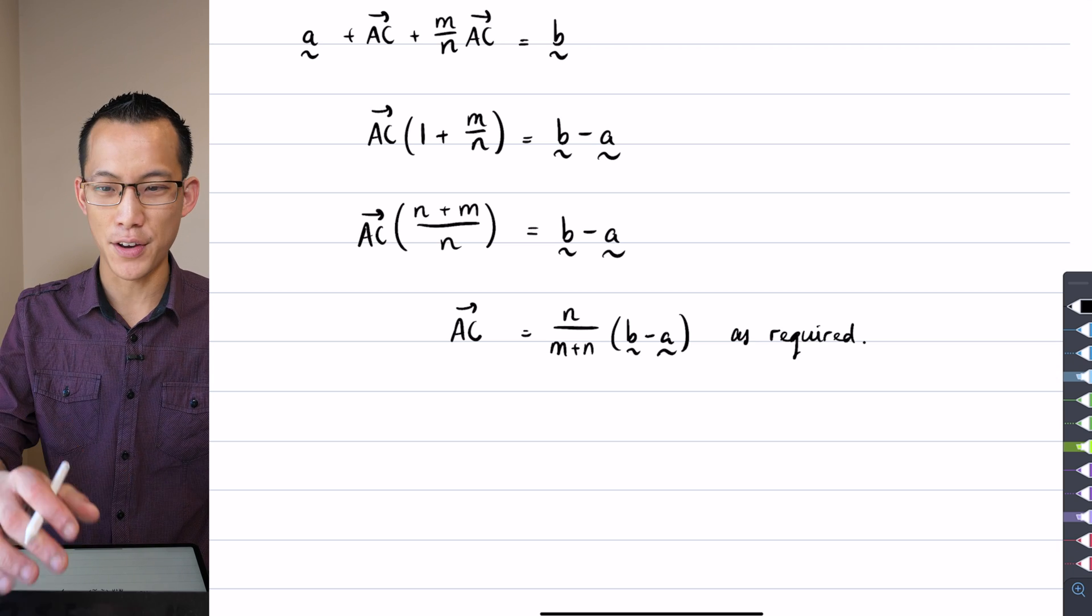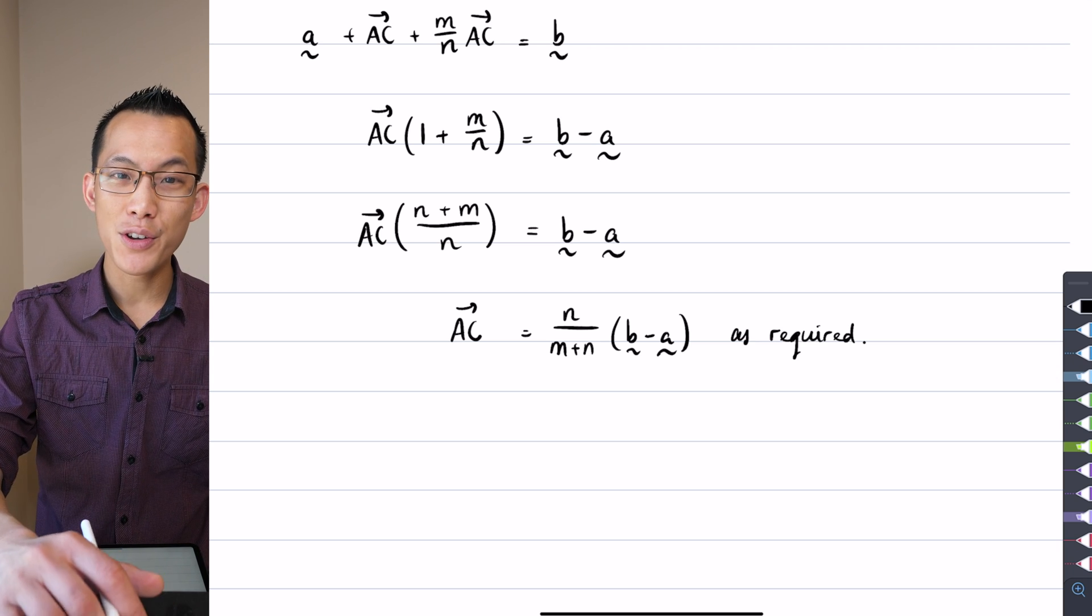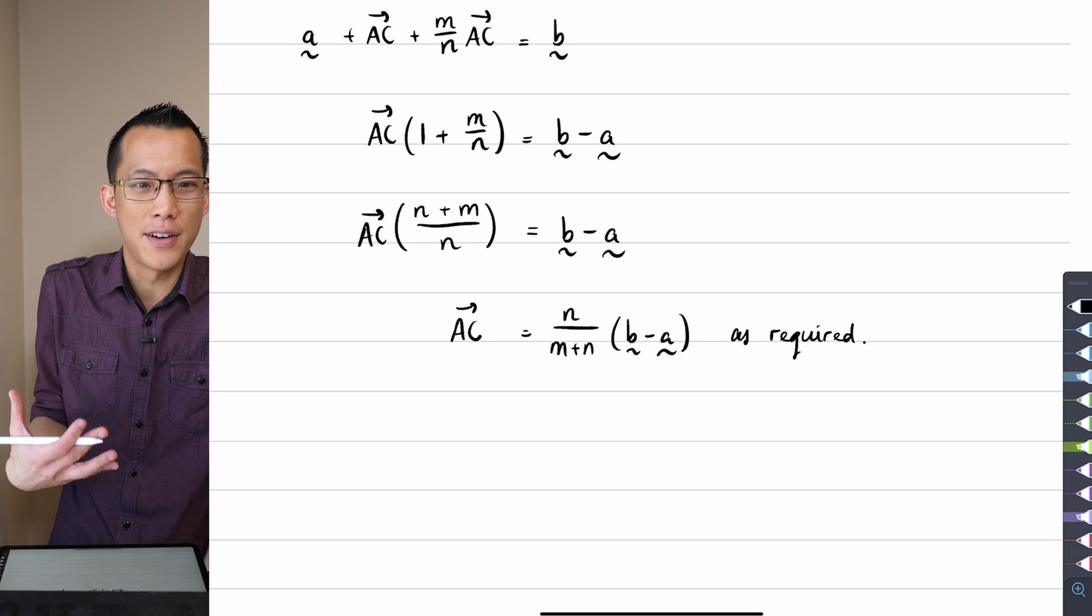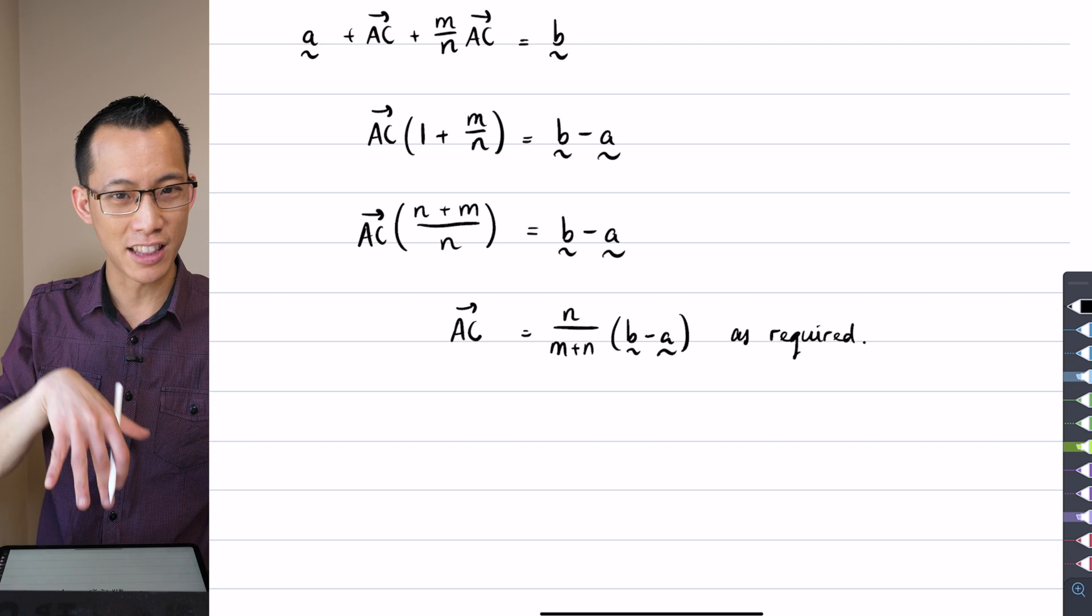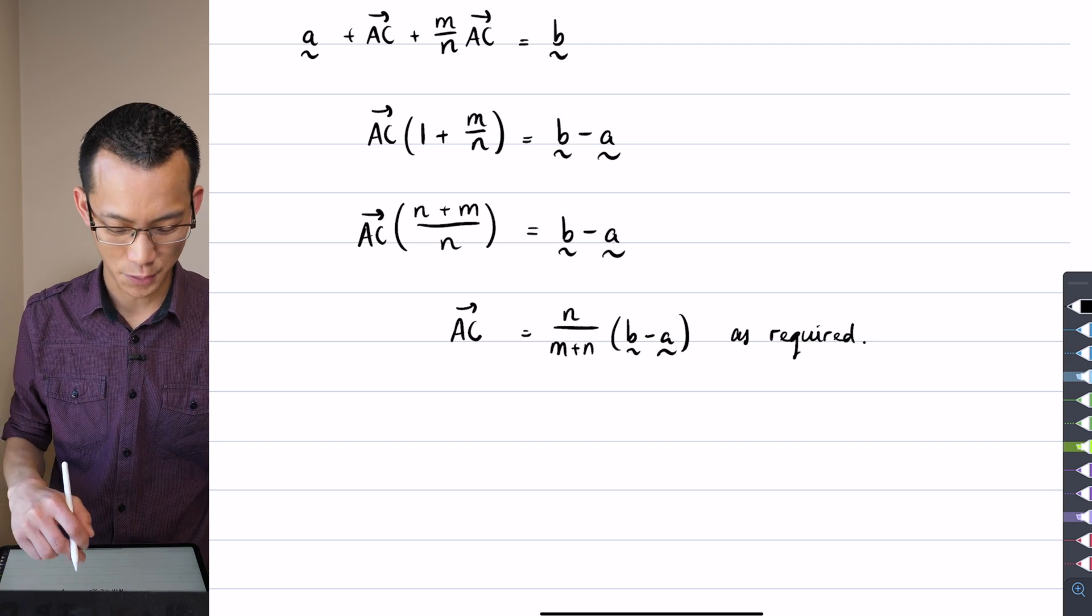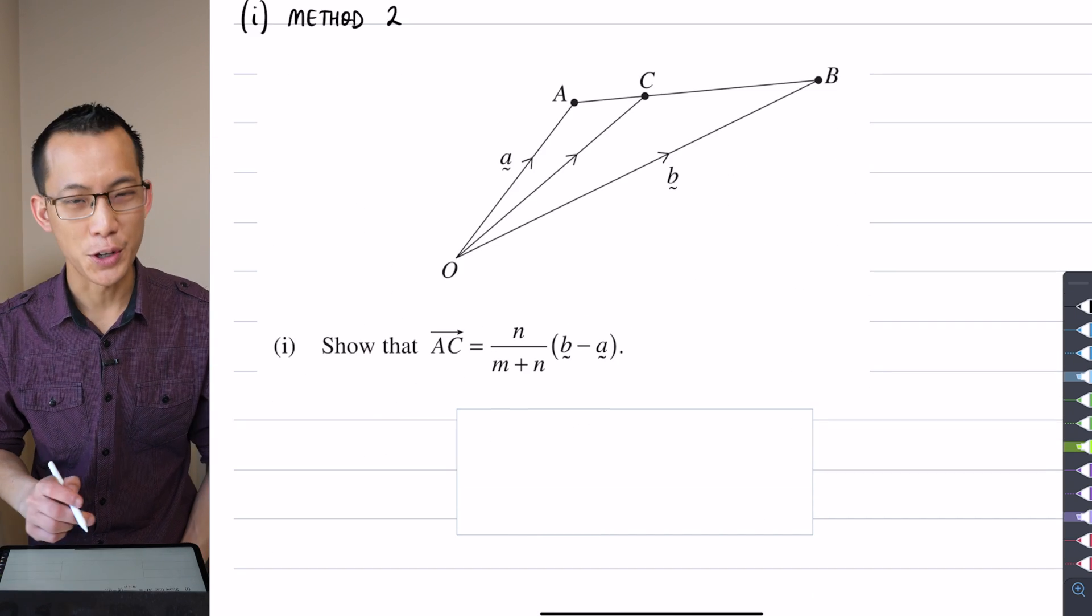So I'm going to show you one more path which I think is attractive because it takes advantage of thinking and understanding the proportions of the question, but it's a bit kind of like blink and you'll miss it in terms of the working. So here comes Method 2.